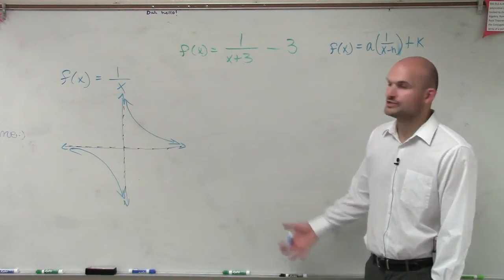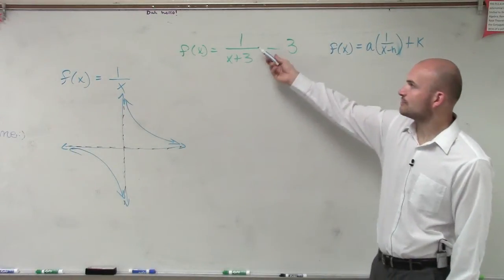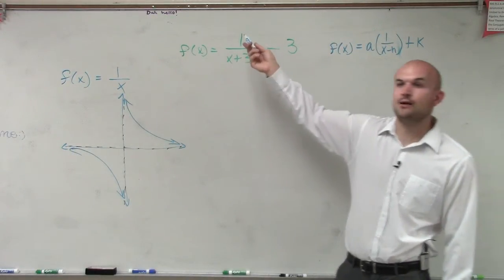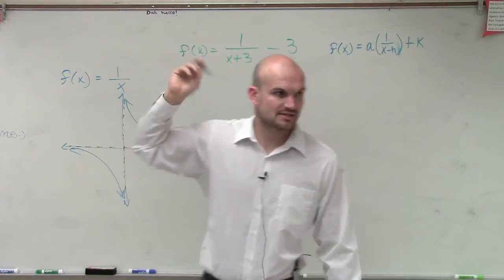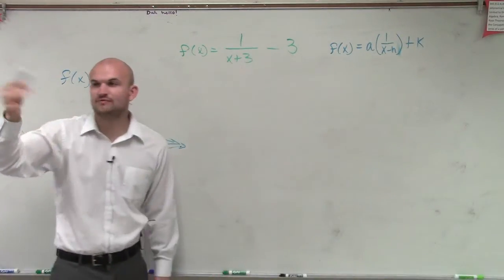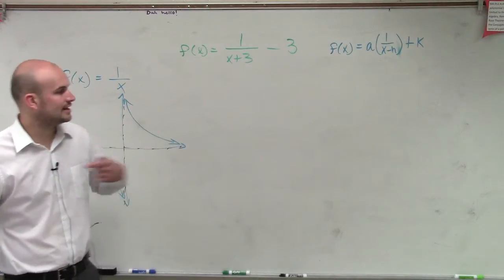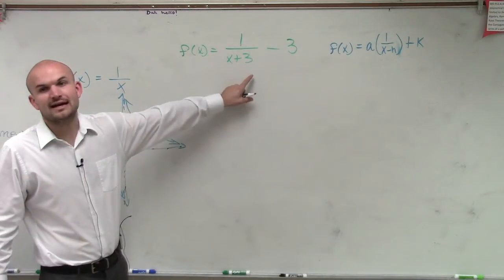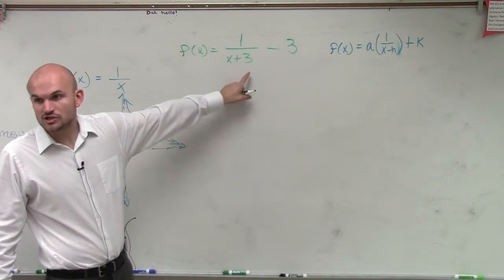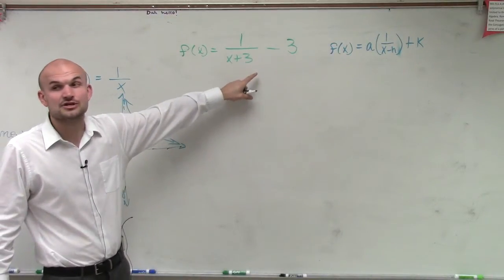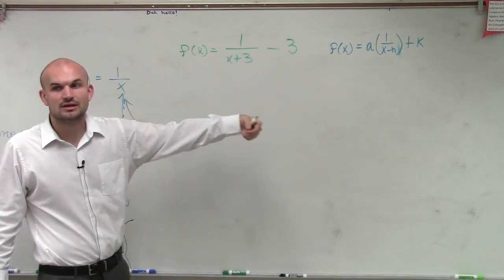So what we're going to do is now I want to apply these transformations. So first of all, I notice am I multiplying by a number a right now in this case? No. So therefore, I'm not going to have a reflection, nor am I going to have a stretch or horizontal shift left or shift right. However, I can say that I have x plus 3. So that means that's going to be my h.